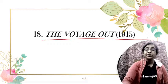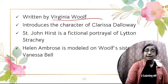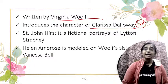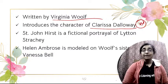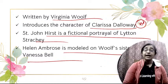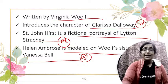Next is The Voyage Out, published in 1915, the first novel of Virginia Woolf. This novel is important because it introduces the character of Clarissa Dalloway, which we find in full-fledged form in Mrs. Dalloway. St. John Hirst is a fictional portrayal of Lytton Strachey, and Helen Ambrose is modeled on Woolf's sister Vanessa Bell.